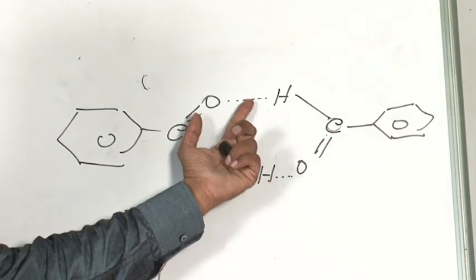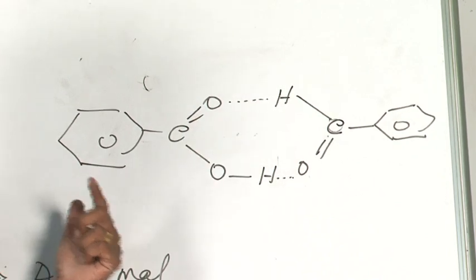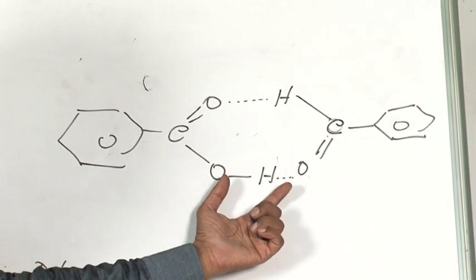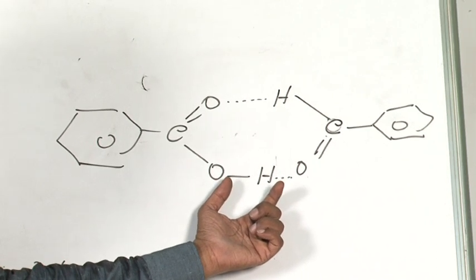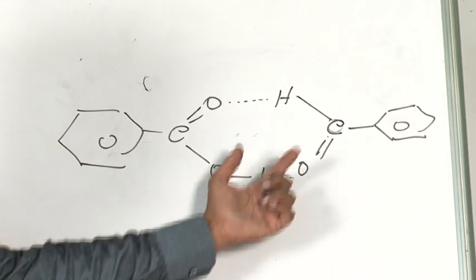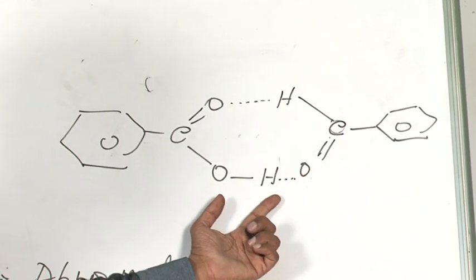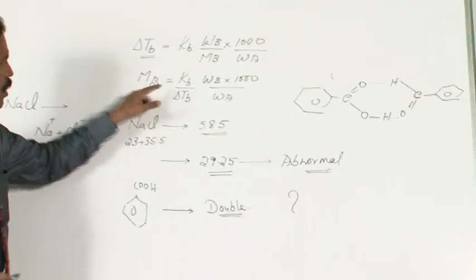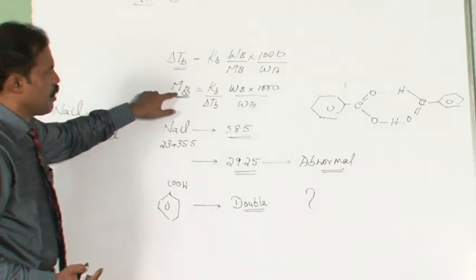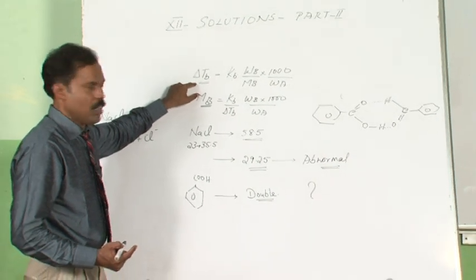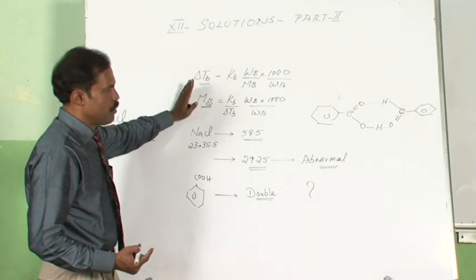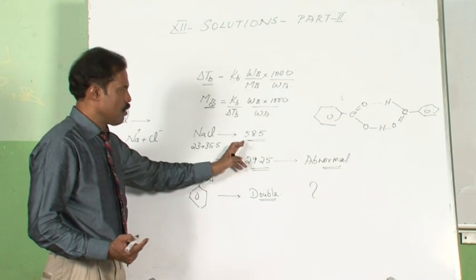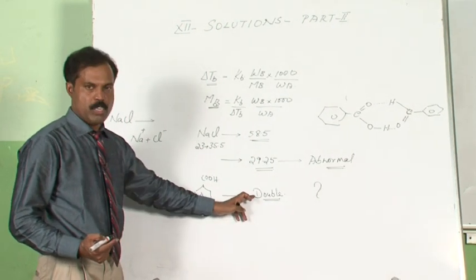These are hydrogen bonds. The association reduces the number of particles. When the number of particles gets reduced, the colligative property gets reduced, and molecular weight gets increased. Abnormality happens under two conditions: either there is a dissociation or there is an association.